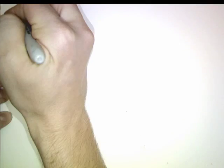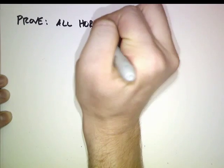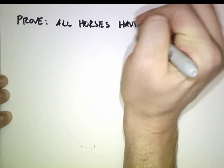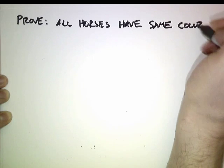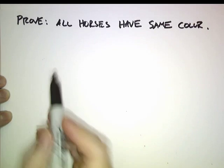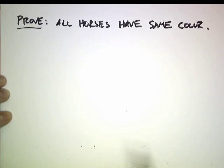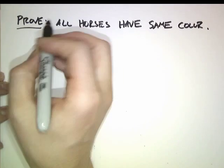Here's an example of how to use induction in a bogus way. I'm going to prove that all horses have the same color. Obviously this is false, so I'm going to be using proof by induction illegally somewhere. Some step will be wrong — let's see if you can figure out where it is.